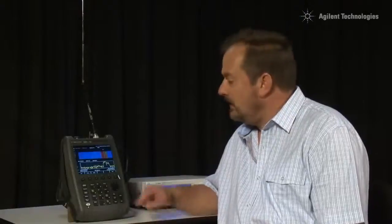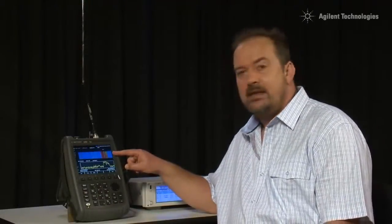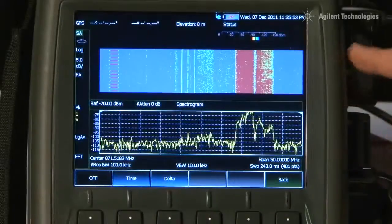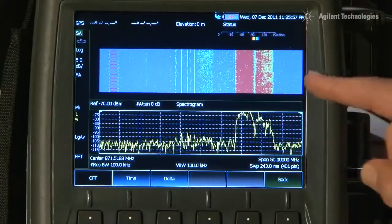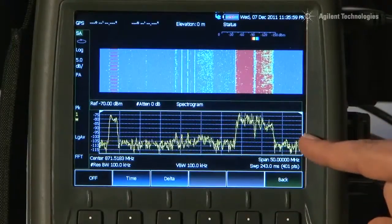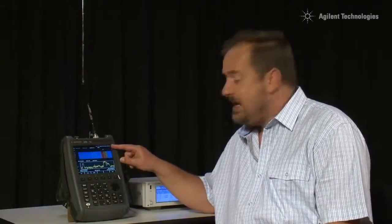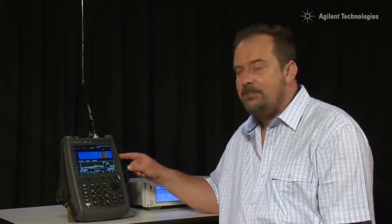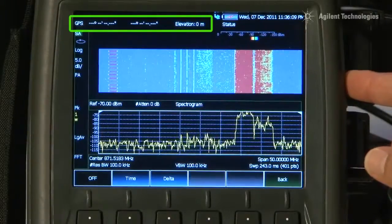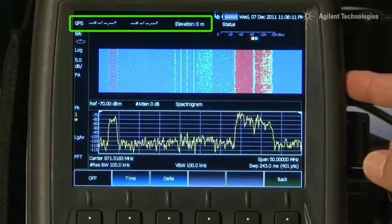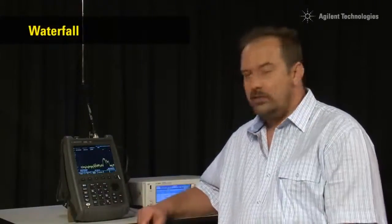And best of all, every captured trace can be logged and recorded into either the FieldFox's internal memory or onto a USB memory stick or the mini SD card. As well as storing the frequency and amplitude data, it also stores the date and the time. And if we have a GPS receiver plugged in, it will even store the lat and long position of where that trace was captured. And if you prefer, we can display it as a waterfall display.